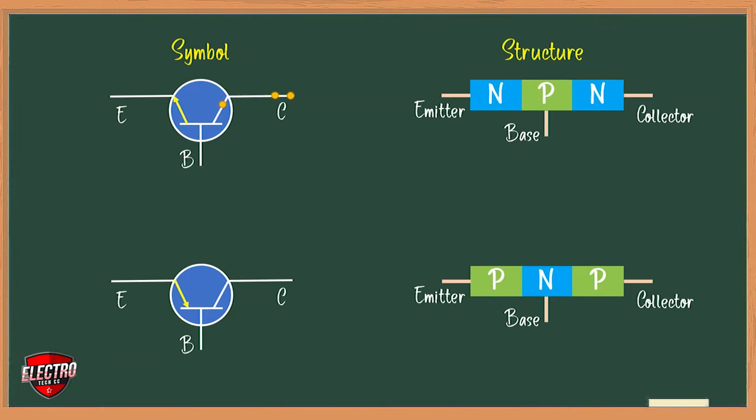For PNP transistor, the arrow head points from emitter to base, meaning that emitter is positive with respect to base. For NPN transistor, it points from base to emitter, meaning that base is positive with respect to emitter.